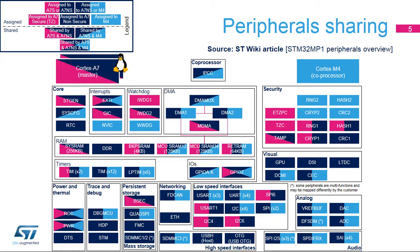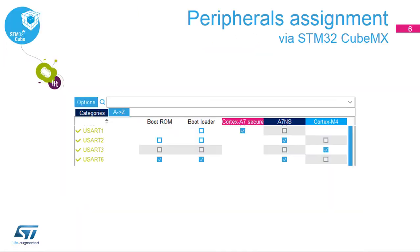Shared means that the peripheral can be concurrently used by two or even three different execution contexts. This mode implies register banking or other mechanisms that ensure there is no contention between the given contexts when they access a common resource. For instance, TIM instances can be assigned to one runtime context and will only be used by this one. RCC is a system peripheral that can be concurrently accessed by the three runtime contexts.